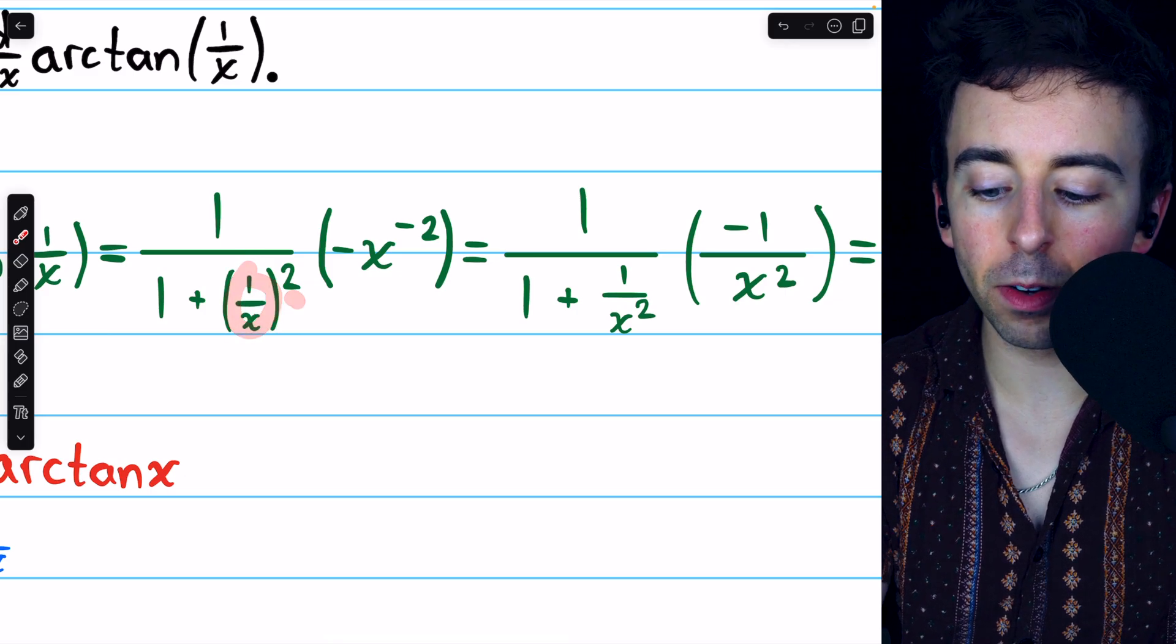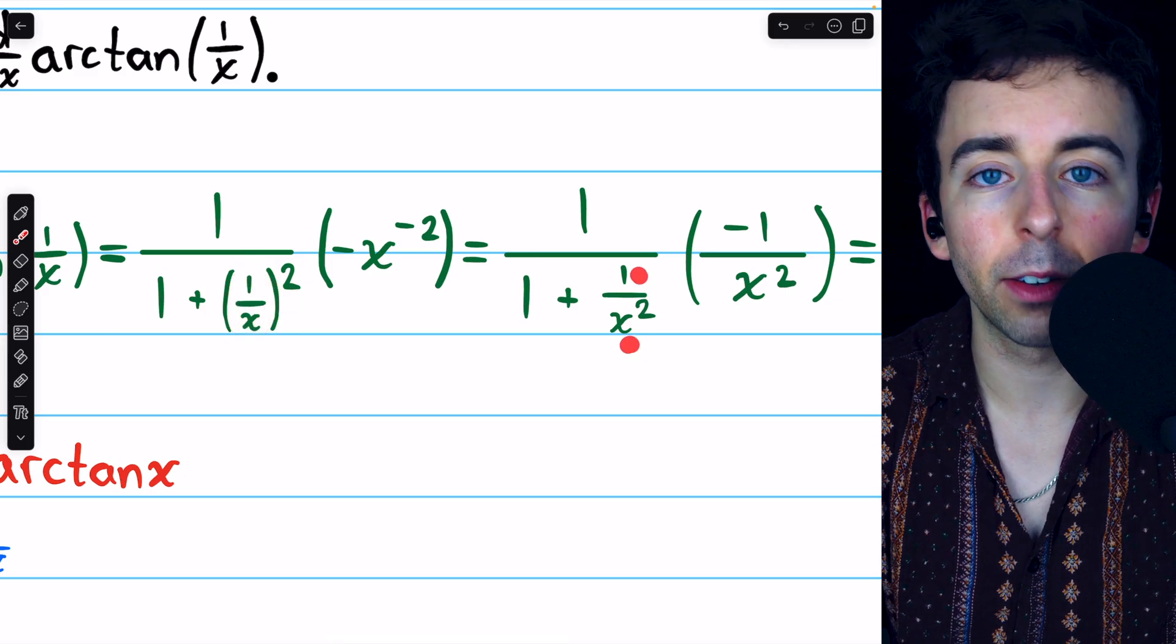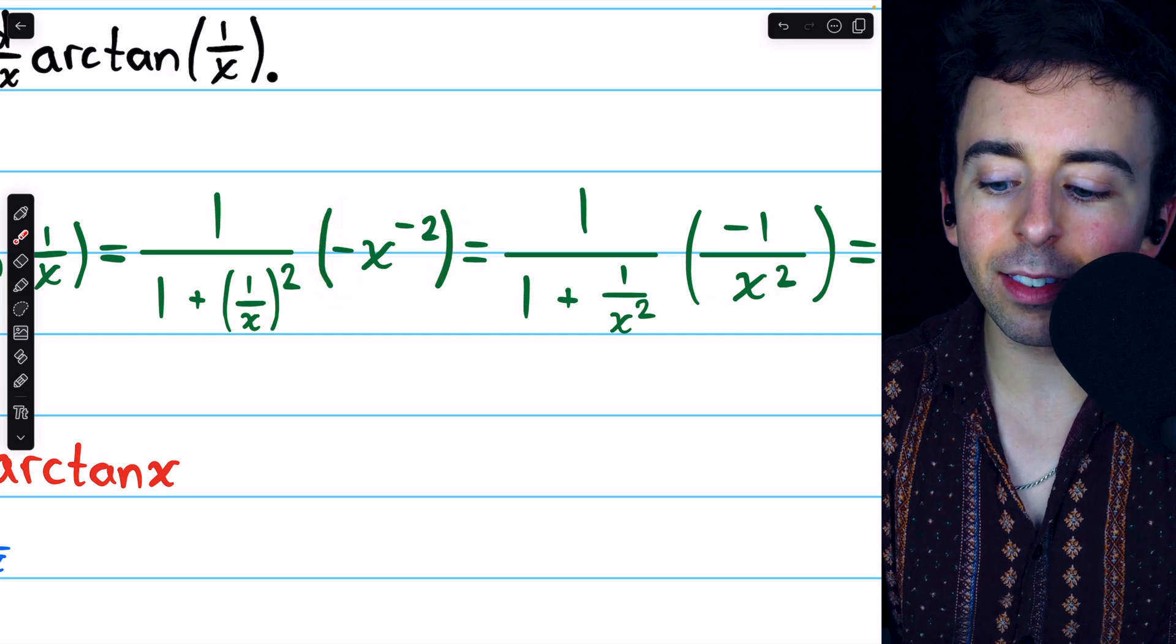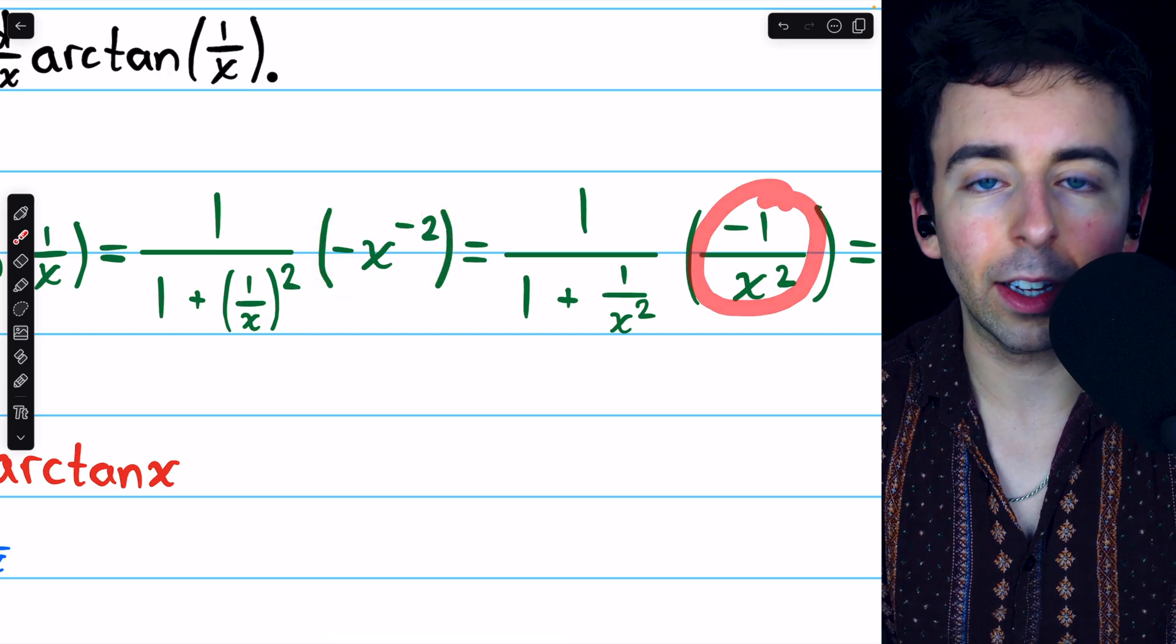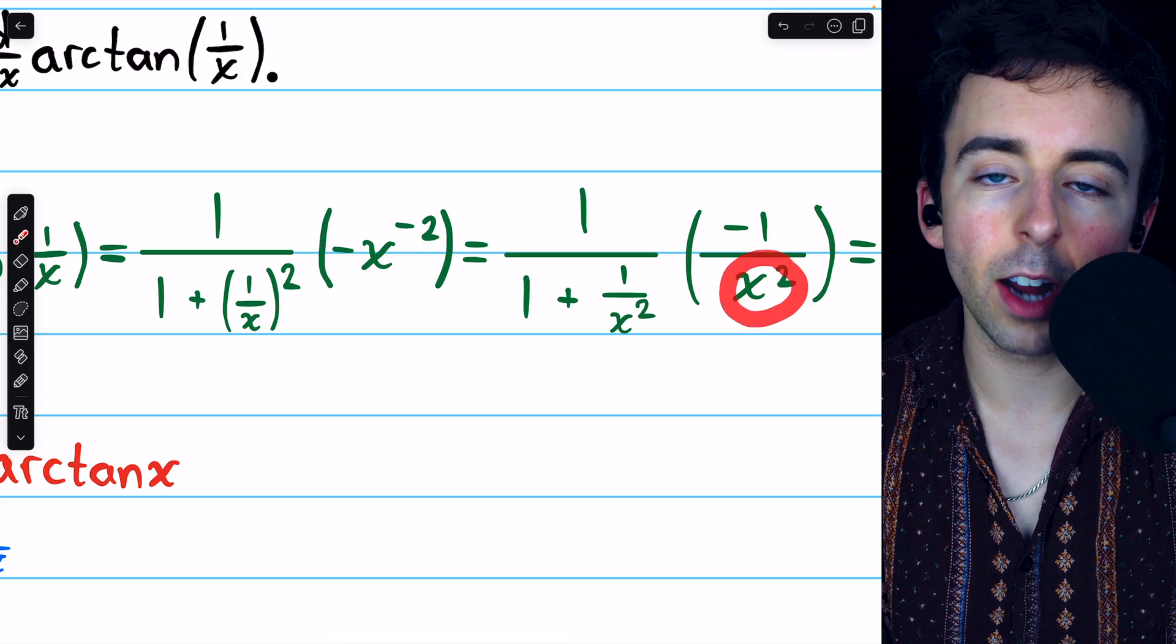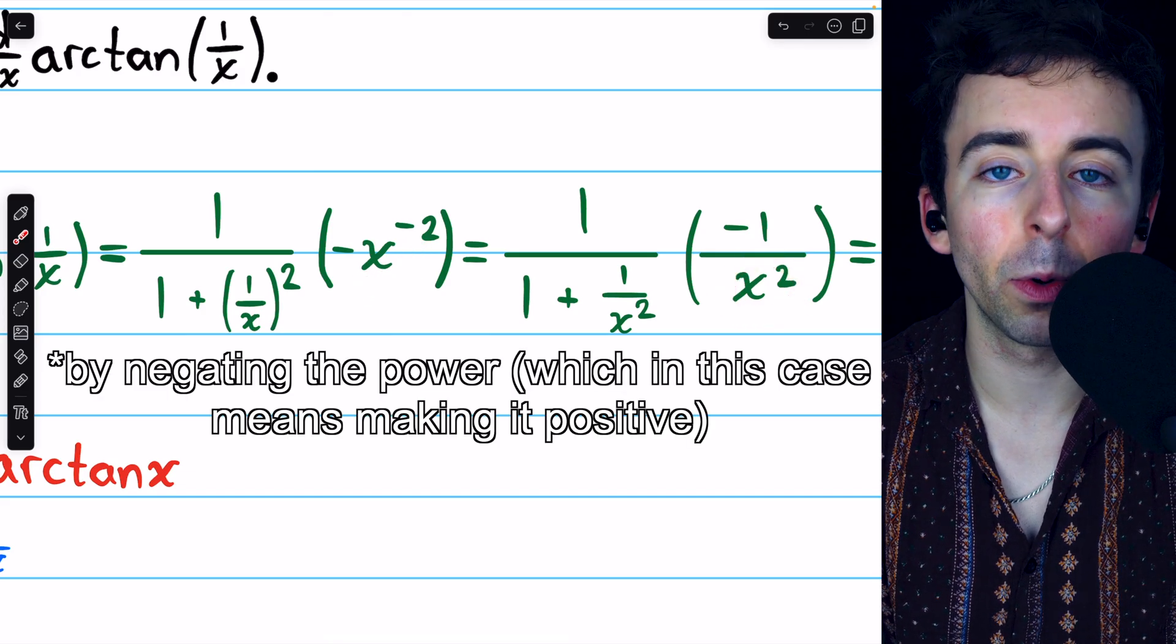1 over x squared is 1 over x squared, and negative x to the negative 2 is the same as negative 1 over x squared. We can move x to the negative 2 down to the denominator by making the power negative.